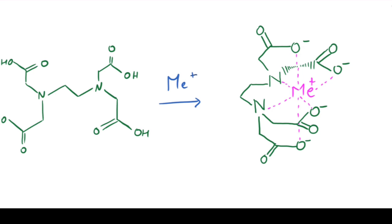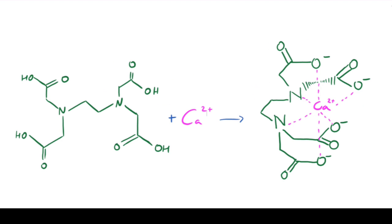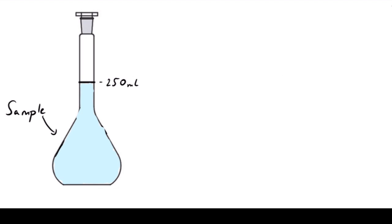For the purpose of this experiment, this reaction happens in a one-to-one ratio with both calcium and magnesium ions. In this example, we have 250 milliliters of a sample of limestone dissolved in acid, which contains an unknown concentration of calcium and magnesium ions.